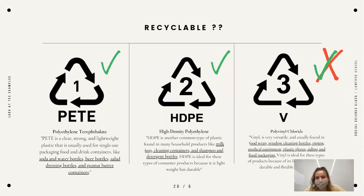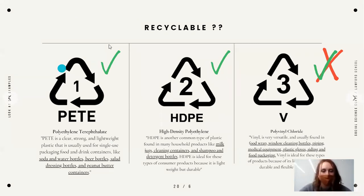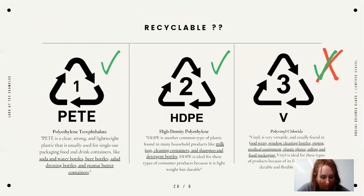Now we're going to talk about the different types of recyclables. The most common is number one, called PET — most stuff we think of as recyclable: water bottles, soda bottles, things like that. Those are recyclable at most recycling locations. Number two is difficult to recycle and is better to be reused, though some places will take it — just double-check your local location.